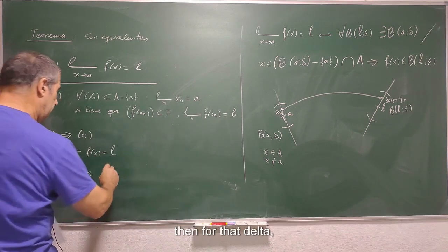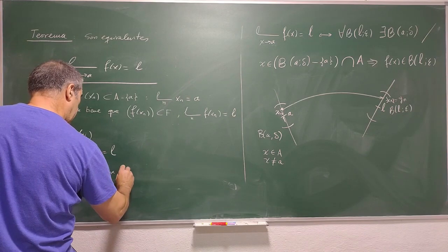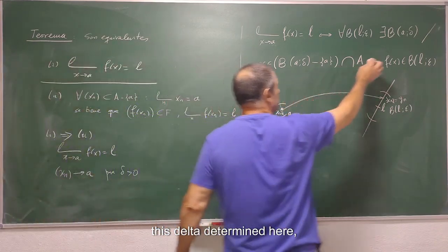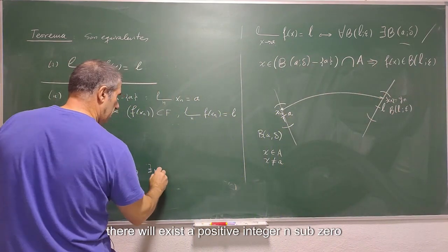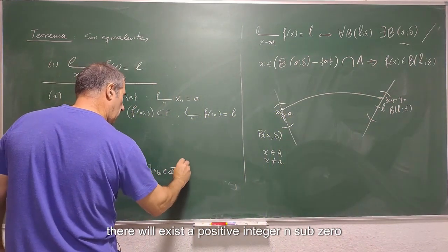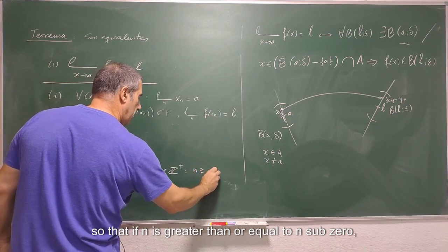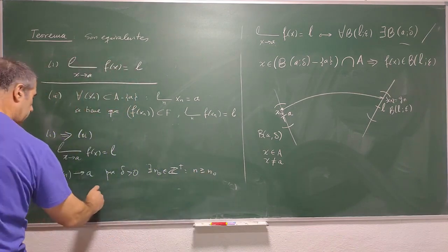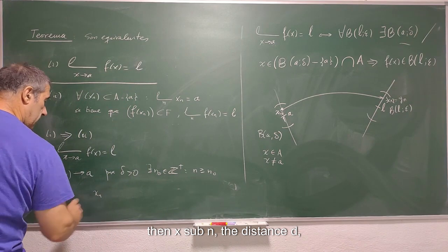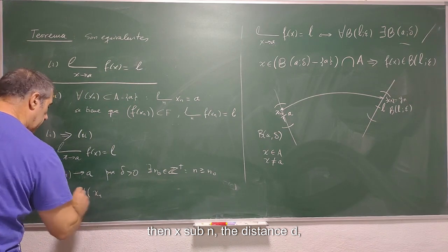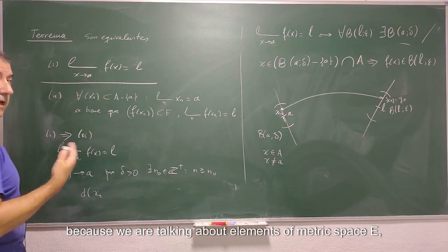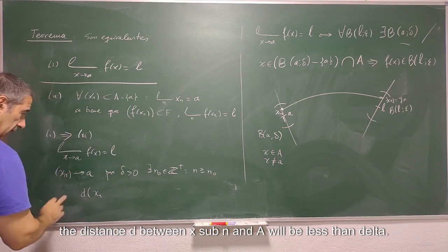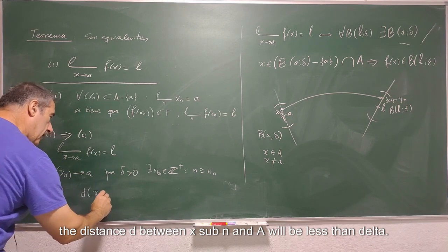As we have said that x sub n is a sequence that converges to the point a, being x sub n different values of A, all of them different from point a, then for that delta, this delta determined here, there will exist a positive integer n sub 0.